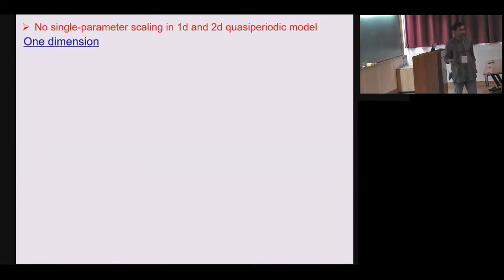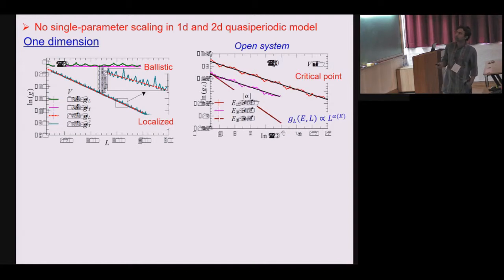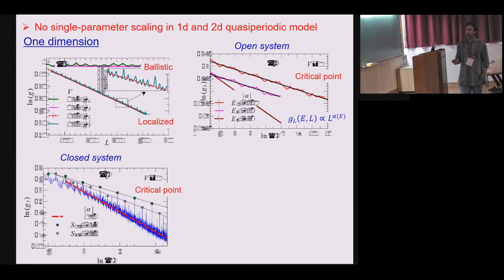So I will just state the results. The result is that if you look at this transition there is no single parameter scaling in 1D and 2D. If you look at the conductance as a function of length you find that this conductance process has some overall scaling like ballistic localized in these two phases and in the critical state it is sub diffusive however there has a very non monotonic fluctuation as a function of length.